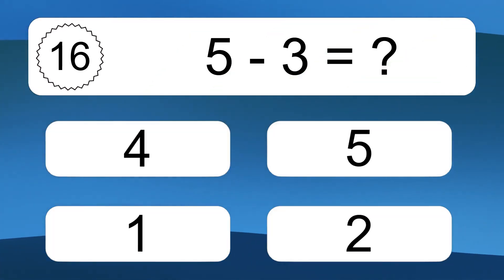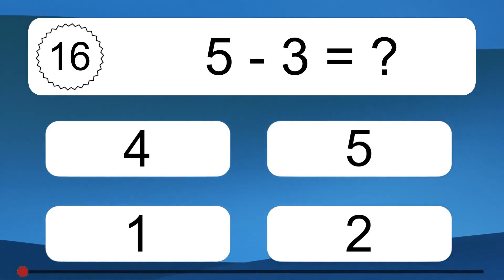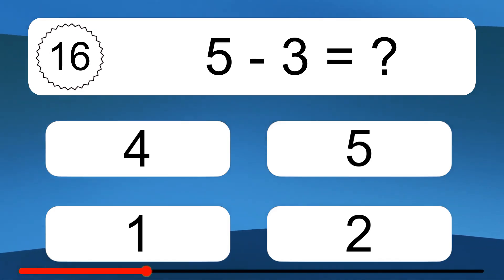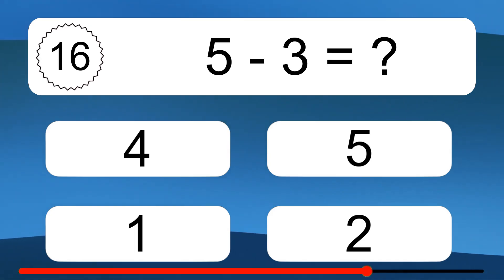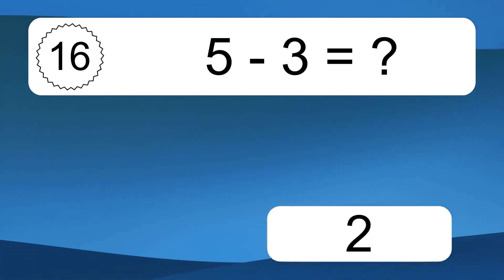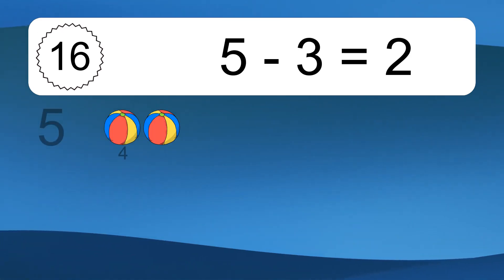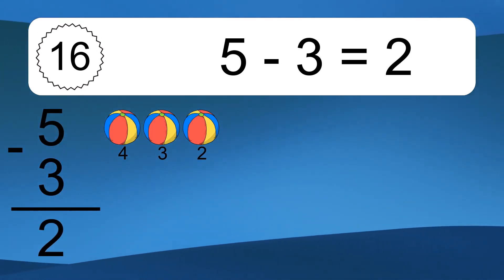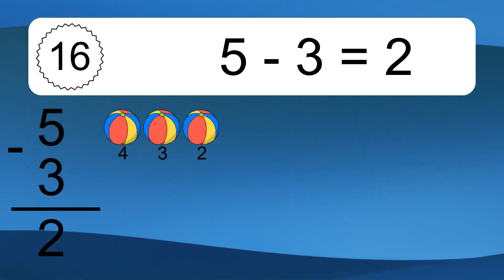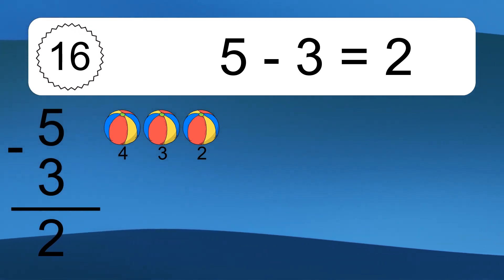5 minus 3 equals what? 5 minus 3 equals 2. Let's count it: 4, 3, 2.